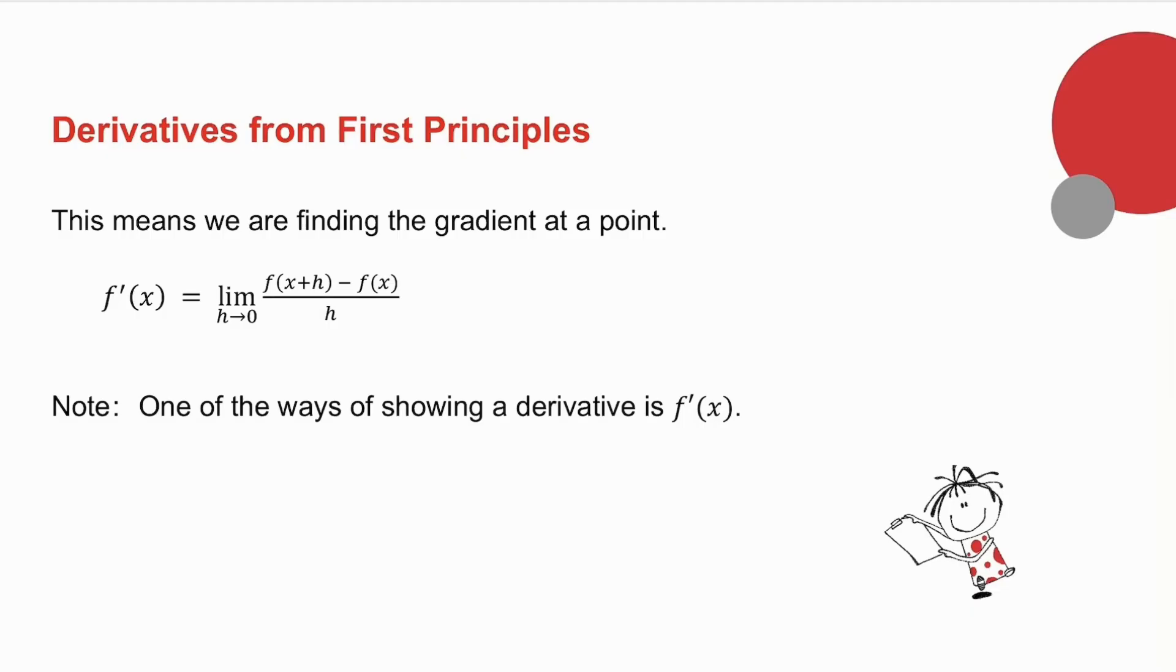Now this is not to be confused. You've come across f⁻¹(x) in functions. And f⁻¹(x) means an inverse of a function. So you've got to be very careful and know the difference between f⁻¹(x) and f'(x). f'(x) is the derivative, in other words, the gradient.